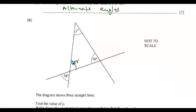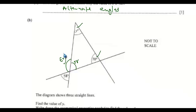Alternatively, you can use the exterior angle of a triangle. This is an exterior angle. You can use the sum of angles on a straight line to get the value of this exterior angle. So the first point would be angles on a straight line, and the second point would be sum of angles in a triangle, or vertically opposite angles.